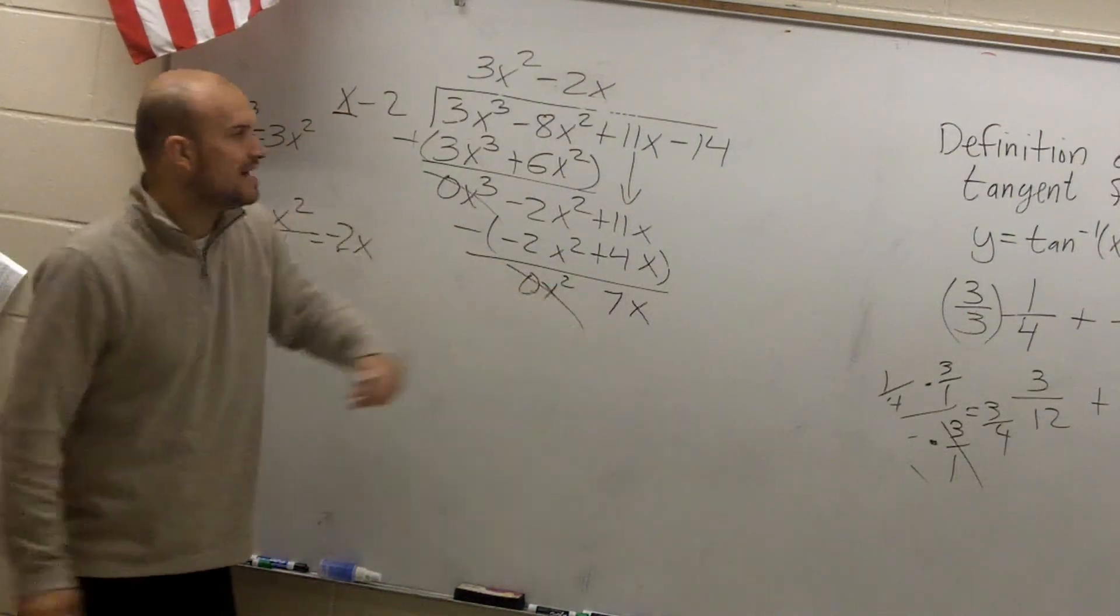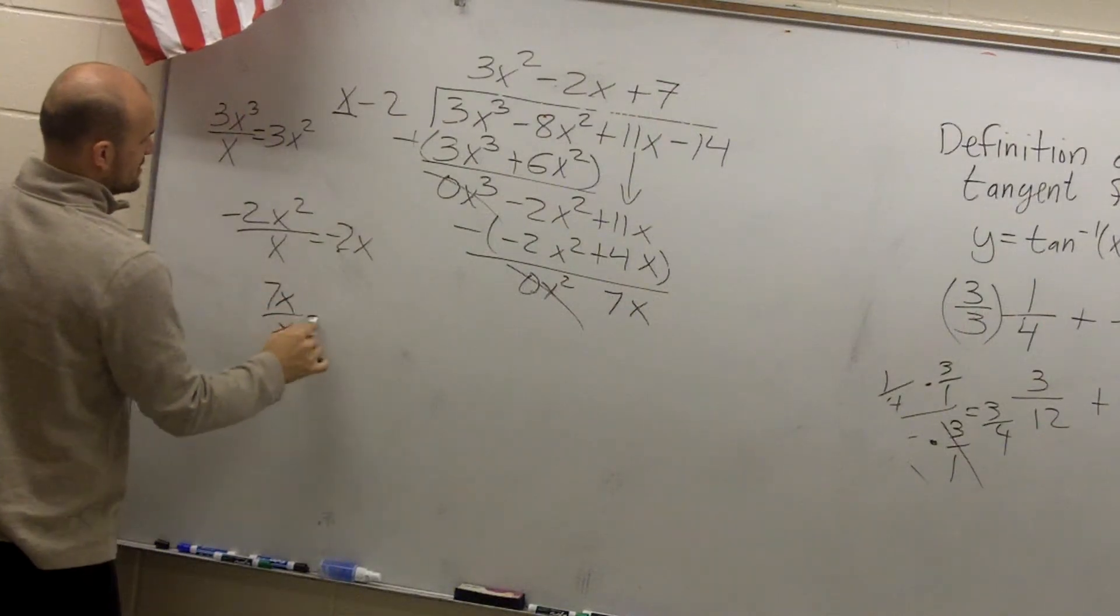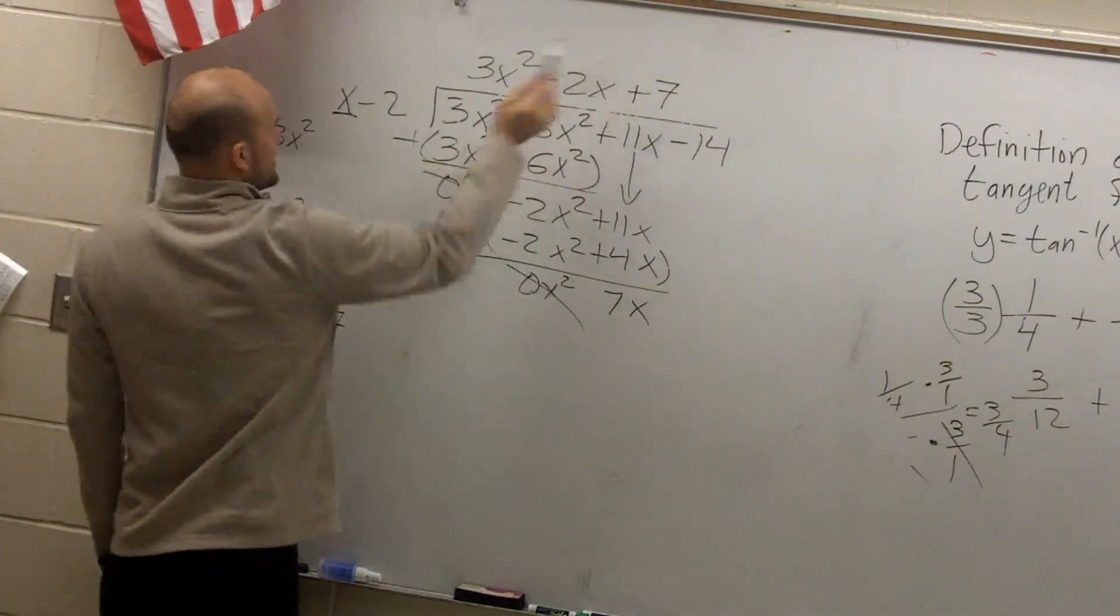x divides into 7x. 7x divided by x equals 7. Here's your answer, 7.